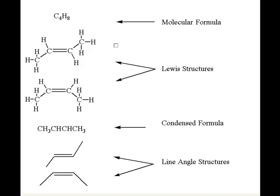But let's take a look. Lewis structures are as follows. This is for the trans isomer. This is for the cis isomer.